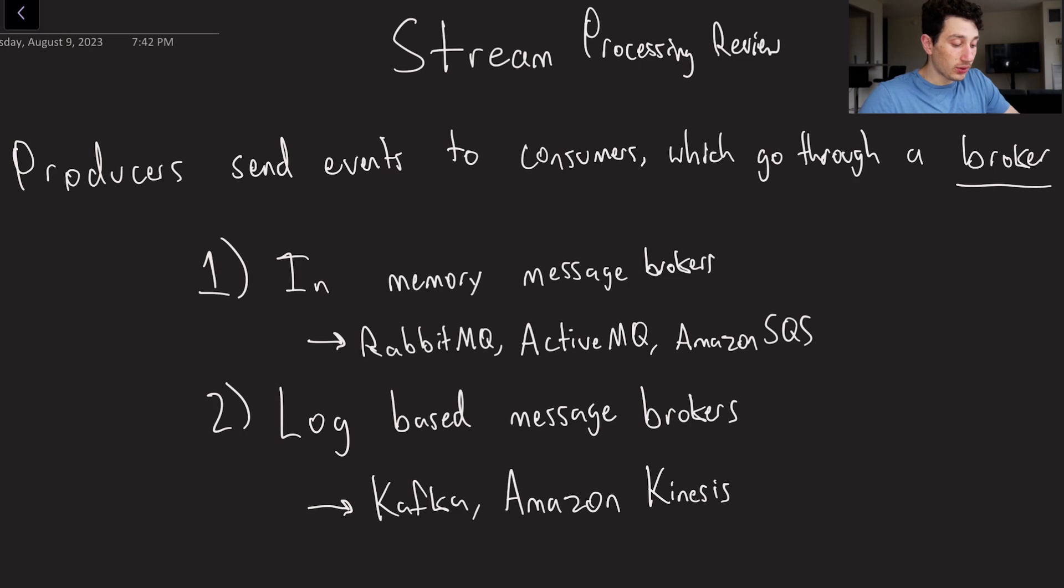Alright, so let's start this video with a quick review of all the stream processing stuff that we did in our last video. So basically to put things very simply, all stream processing really is, is we have two sets of nodes in our system. We've got producers and we've got consumers and they communicate with one another via events. Now we could send those events directly and some ways of stream processing do this.